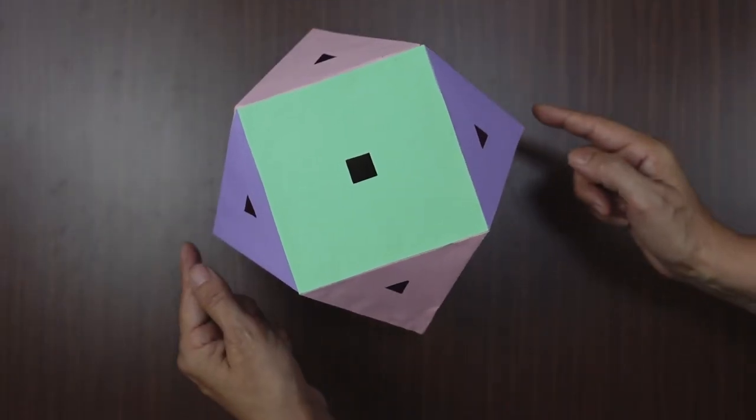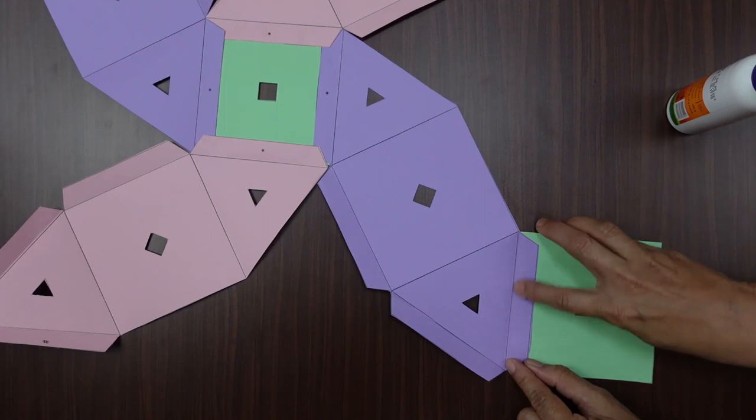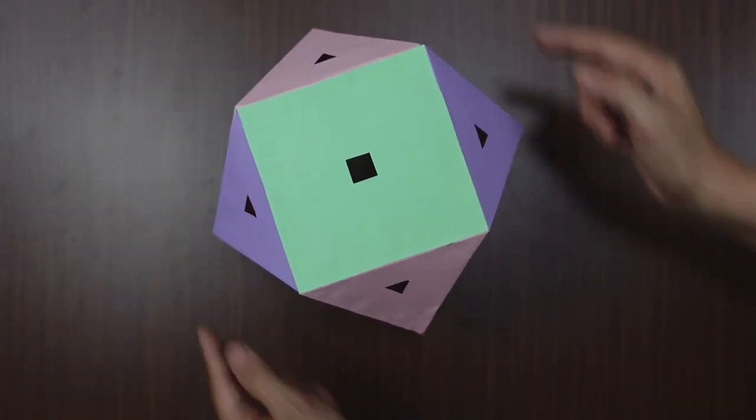Thus when all the flaps are joined to the side flaps we see cuboctahedron formed.